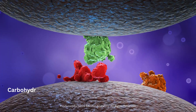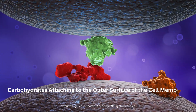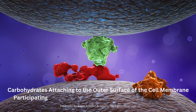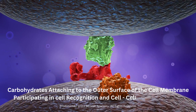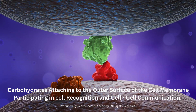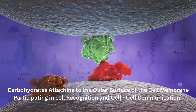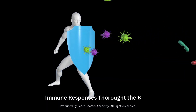Carbohydrates attached to the outer surface of the cell membrane participate in cell recognition and cell-cell communication. These carbohydrate chains form glycoproteins or glycolipids, which can act as markers for cell identification and play a role in immune responses.